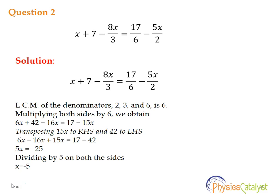Question number 2 is x plus 7 minus 8x divided by 3 equals 17 divided by 6 minus 5x divided by 2.